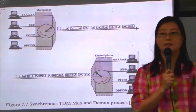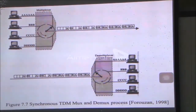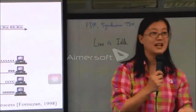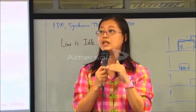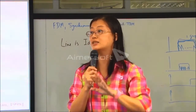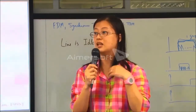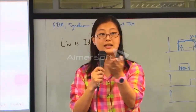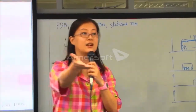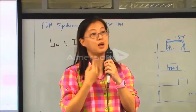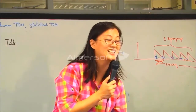In statistical TDM, whoever wants to speak raises their hand — you are the first one who wants to speak, so you speak first. But you have to identify yourself — 'This is Amonwit speaking' — because now it's not in order anymore. You are not specified to speak at 1:10 to 1:11 like in synchronous TDM. Anyone can speak, and you are the first one who wants to speak, so you must say 'This is Amonwit' and then speak for one minute.